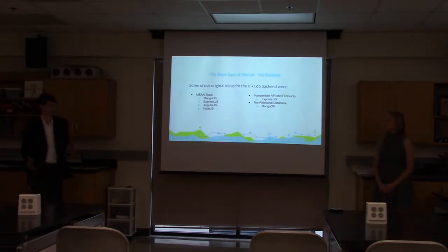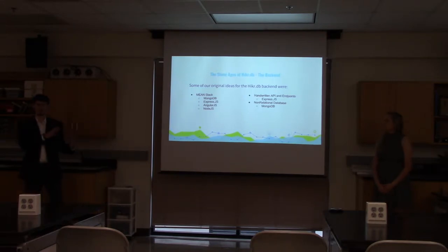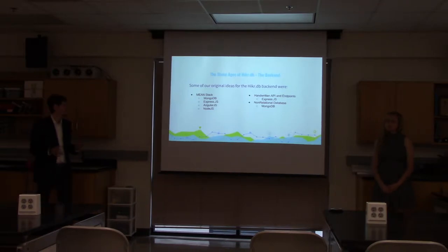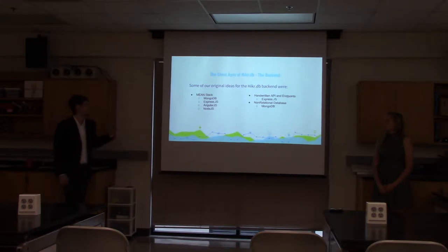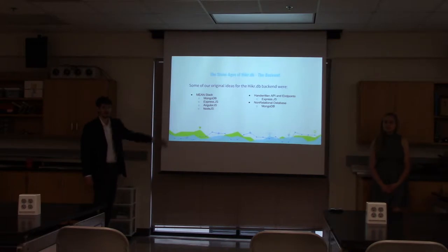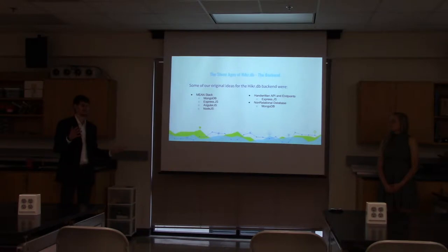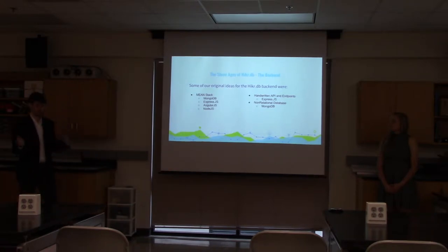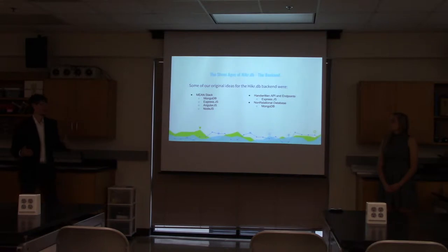Our back end is our web server where we host our web app and database — where half of our project lives. Originally we wanted a MEAN stack. A stack is a set of services or frameworks used to build the back end, server, and database. We originally wanted to use MongoDB, a non-relational database where everything is stored as a sort of text document with no relations between different tables. Trails wouldn't have any relations to users. Express would have controlled how our database and applications interacted with each other.